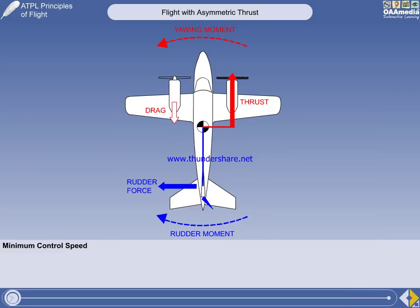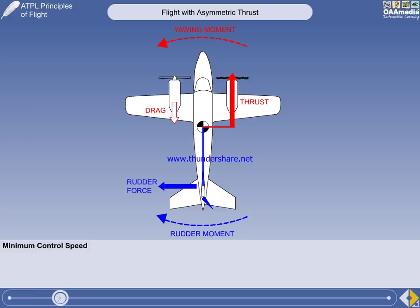Under a certain combination of conditions, control difficulties can arise under asymmetric thrust. Let us assume that the live engine is at a high thrust setting, the rudder is at its full deflection, and the CG is at its rearmost limit — that is, giving the shortest rudder arm.